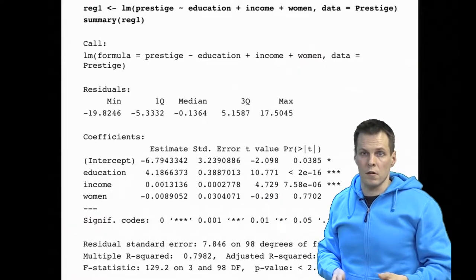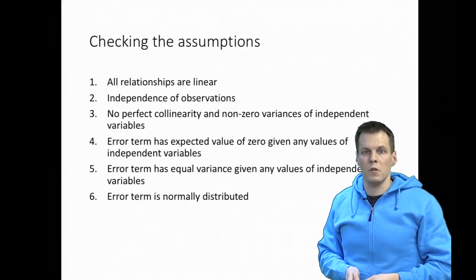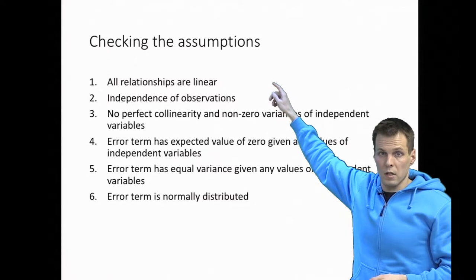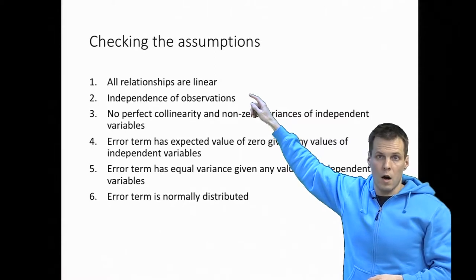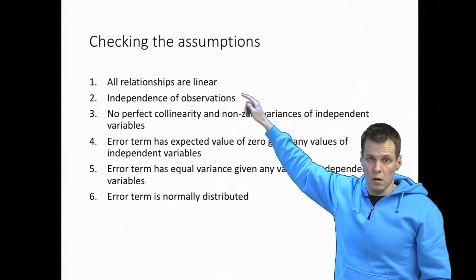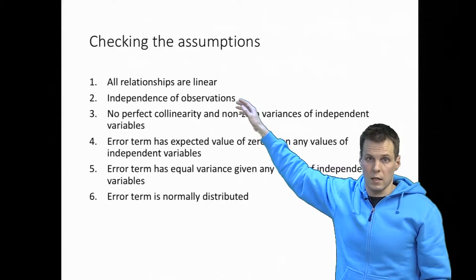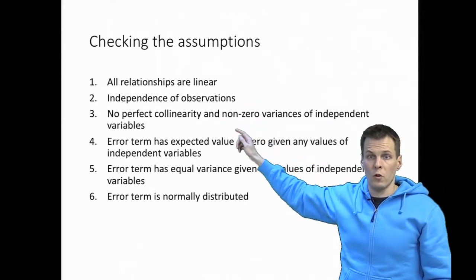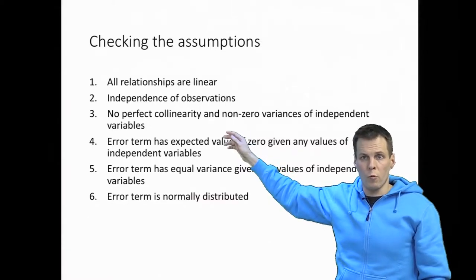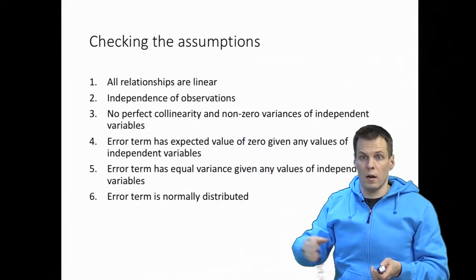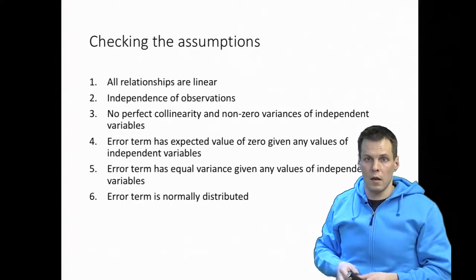How do we know that the six regression assumptions actually hold? The assumptions are that all relationships are linear — it's a linear model. Observations are independent, which comes from our research design. In a cross-sectional study it is difficult to test, but if you have a longitudinal study you can do some checks. The third assumption is no perfect collinearity and non-zero variances of independent variables. That happens if two or more variables perfectly determine one another — for example, if you have a categorical variable of three categories and include three dummies.